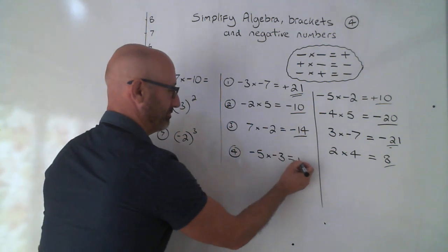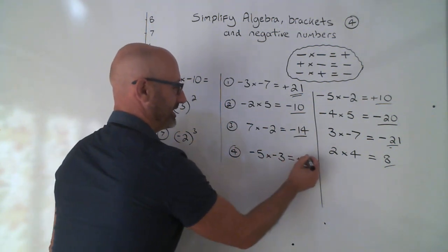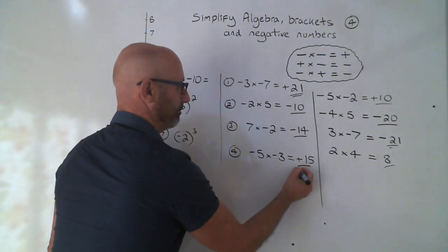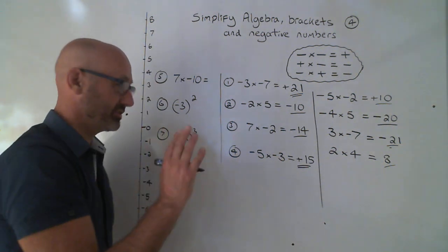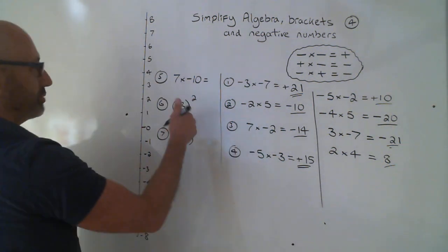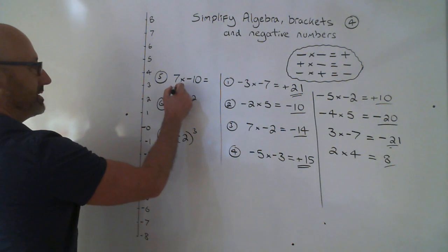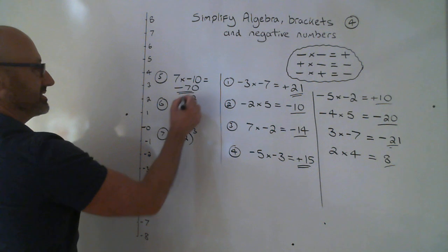Minus times minus. Plus. Five times three. 15. Plus 15. You don't need the plus, it's just 15. This one here. Plus times minus. Minus. Seven times ten is 70. So it's minus 70.